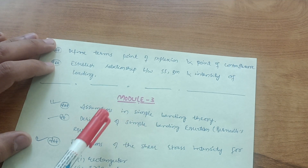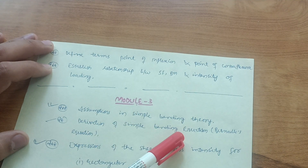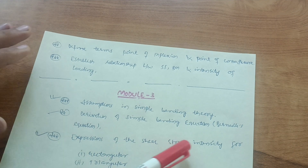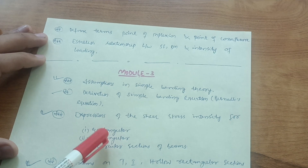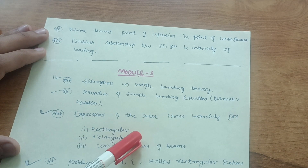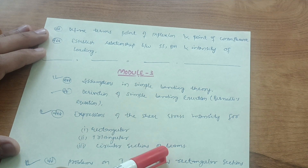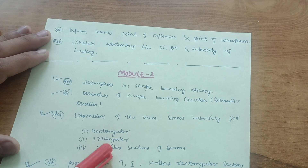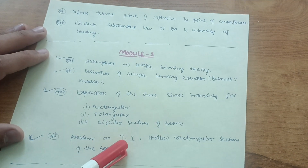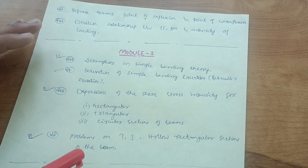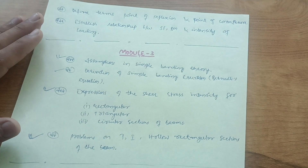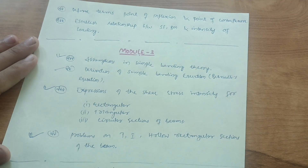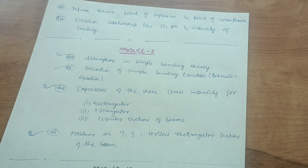In Module 3, cover the assumptions in simple bending theory and the derivation of the simple bending equation — also called Bernoulli's equation. Also cover the expression for shear stress intensity: they may ask you to derive it for rectangular, triangular, or circular sections of a beam. Definitely one question from these three will come in the examination. Then go through problems on T-section, I-section, and hollow rectangular sections of beams.